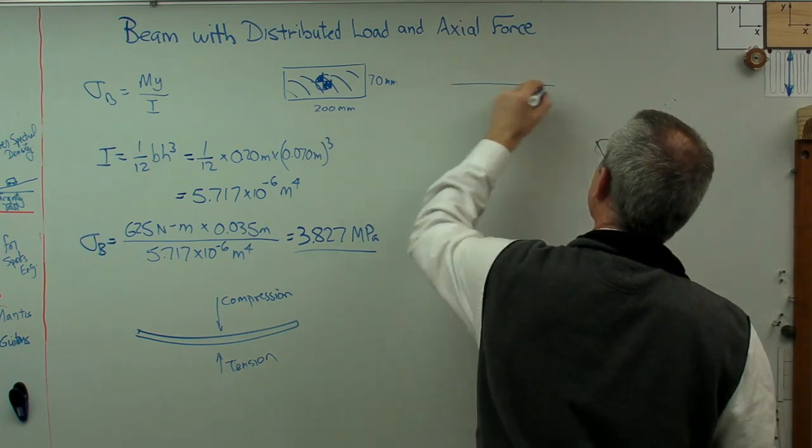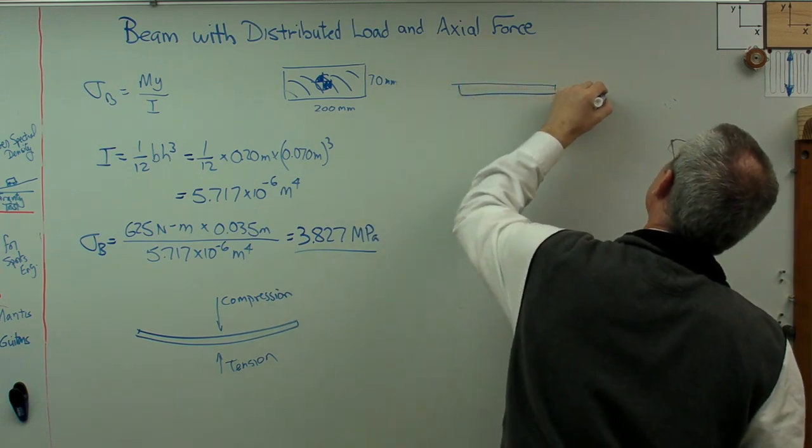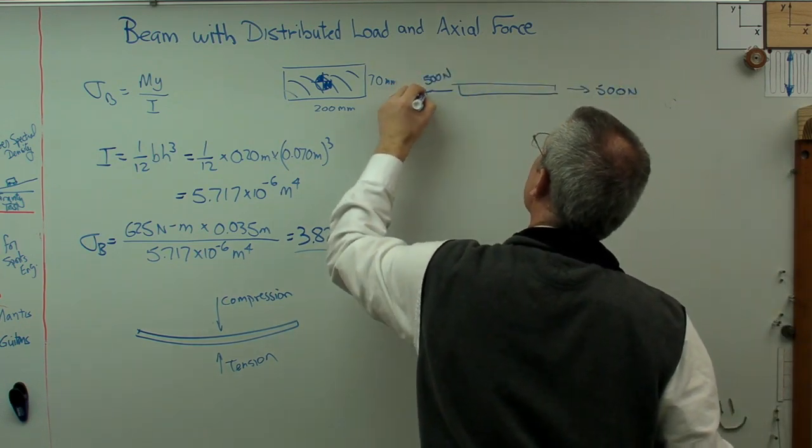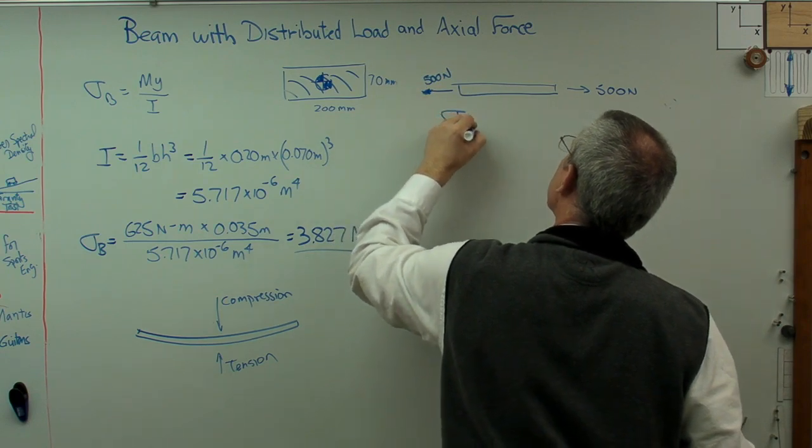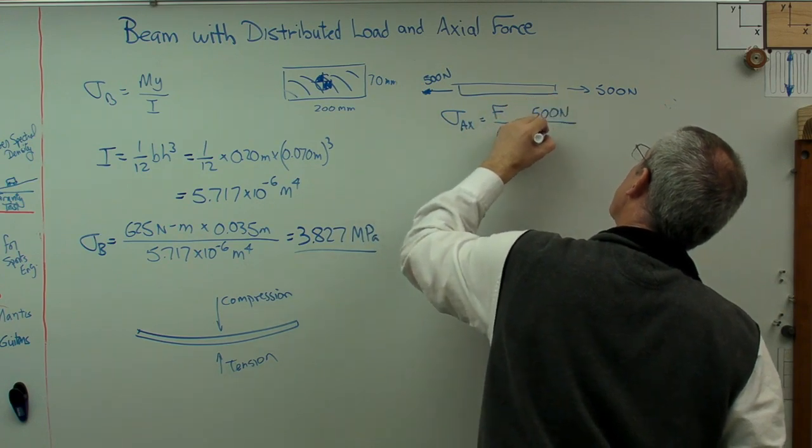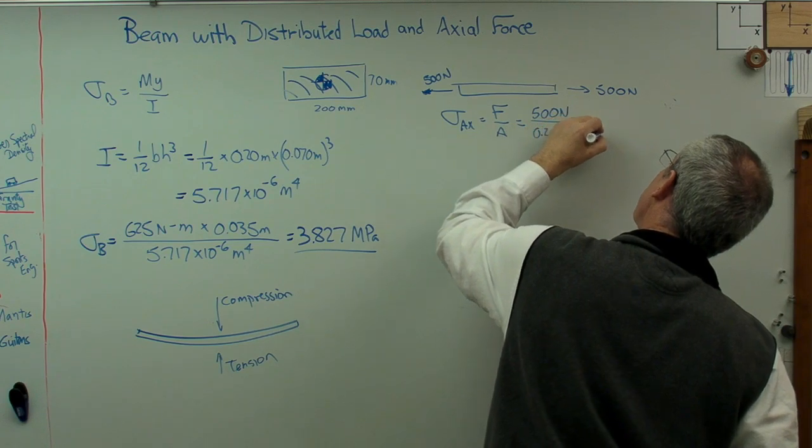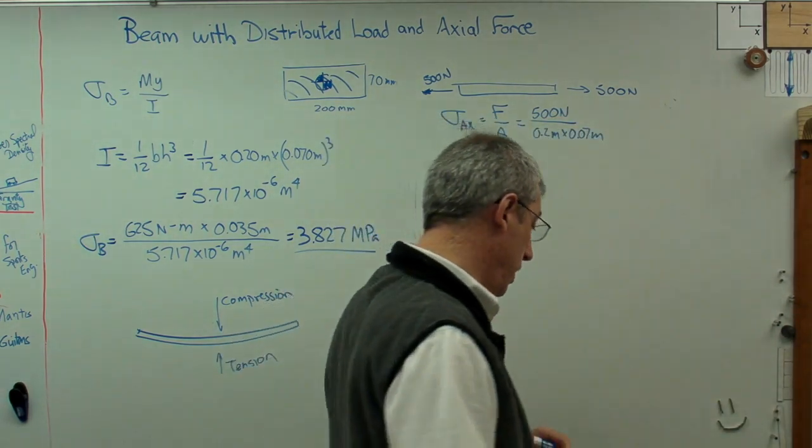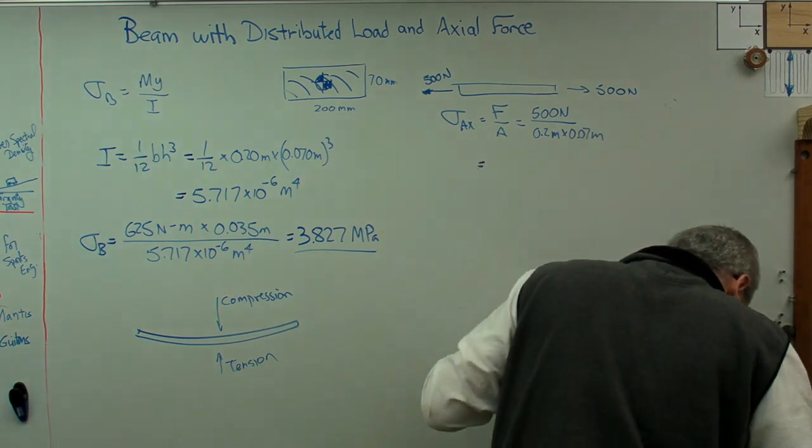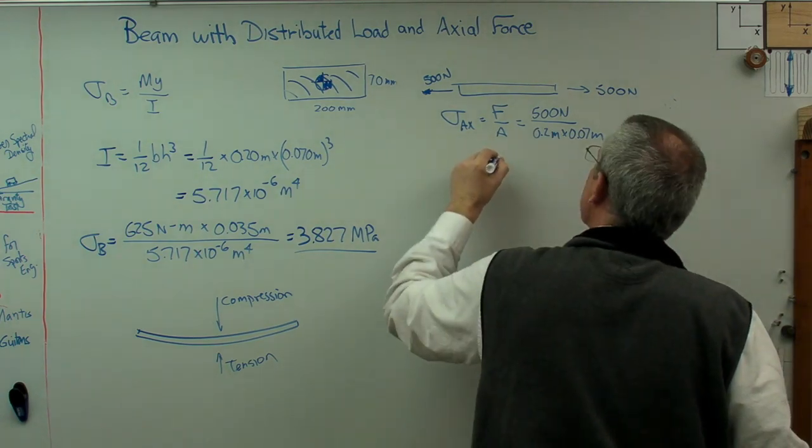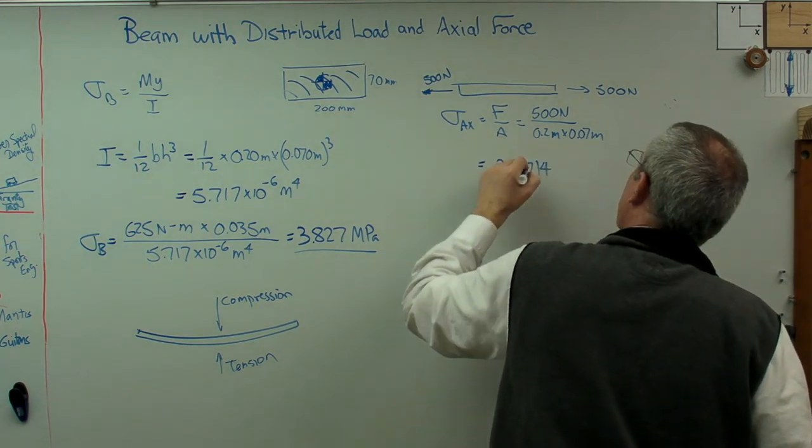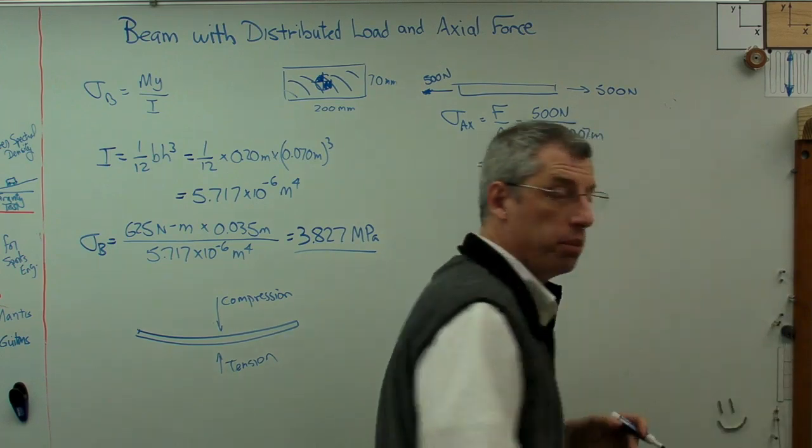We've got 500 Newtons going that way and 500 Newtons going this way. And we need to know the cross-sectional area. Stress axial equals force over the area and that's 500 Newtons divided by 0.2 meters times 0.07 meters. That base times height is the area. And if we work that out, we get this little bitty number. It's 35.714 kilopascals. That's pretty small.